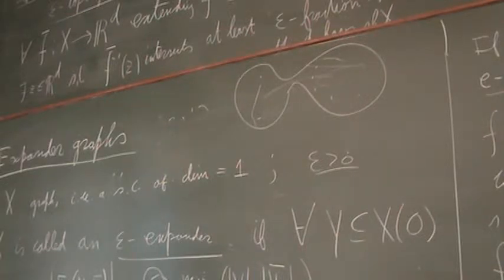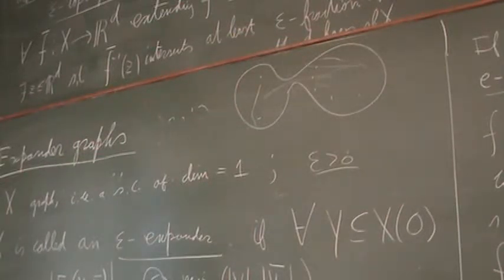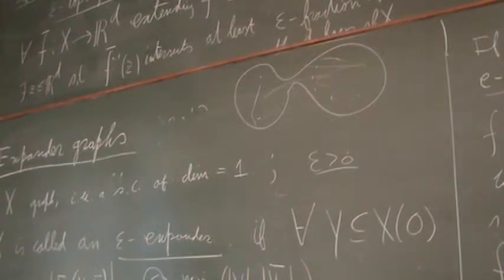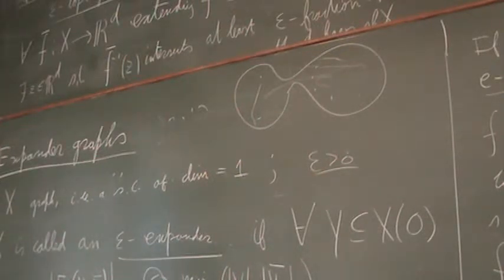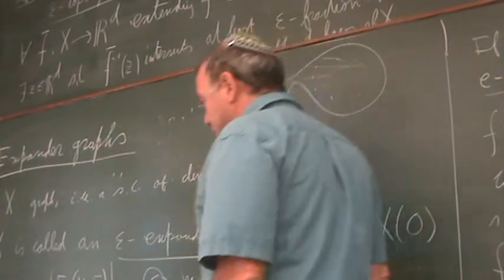What people wanted — and that was the starting point of expander theory — was to find graphs where each microprocessor connects to only about 30 others, and still the graph is very, very much connected. That's essentially what led to the definition of expander, which came from the computer science community.